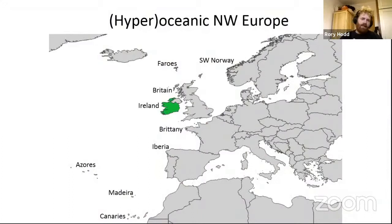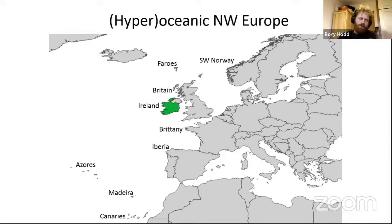Here's Ireland in its context, a little island on the extreme west coast of Europe, subject to the Atlantic with a very mild climate, lots of rain, very humid. It has a very impoverished flora, so much fewer species than most other parts of Europe.